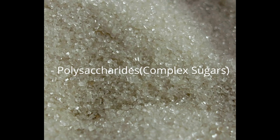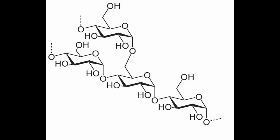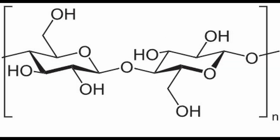The last group of sugars are the polysaccharides — the complex sugars. These are long chains of monosaccharides linked together, used for energy storage and structural support. Examples are starch, used for energy storage in plants found in potatoes, rice, and wheat; glycogen, energy storage in animals stored in the liver and muscles; and cellulose, a structural component of plant cell walls that is indigestible by humans but important for dietary fiber.